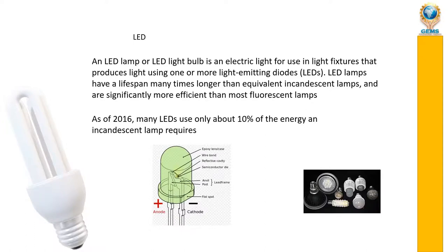Now we will see the LED — Light Emitting Diode, which is an electronic device. An LED lamp produces more lighting while consuming very less energy and giving good lumens. LED lamps have a lifespan many times longer than equivalent incandescent lamps and are significantly more efficient than most fluorescent lamps.